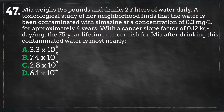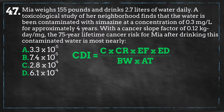This problem is asking us to calculate Mia's lifetime cancer risk after her exposure to this contaminant. Our two primary goals are to calculate her intake rate of this contaminant and then to use this, along with the cancer slope factor, to determine the risk for getting cancer due to this exposure. The first equation we will use is the chronic daily intake rate calculation, which is the following: